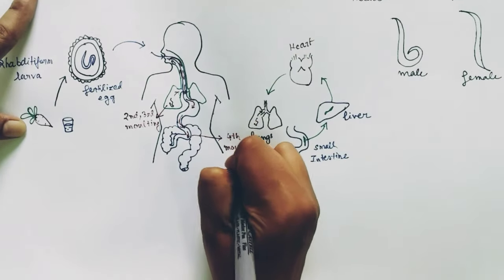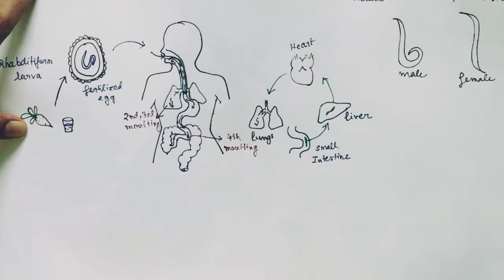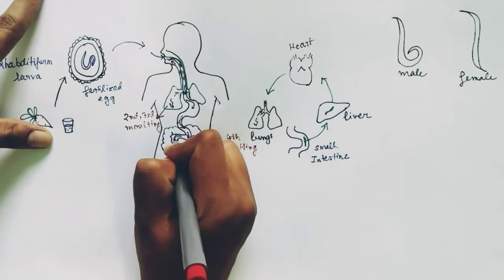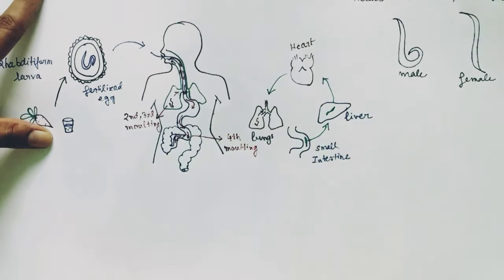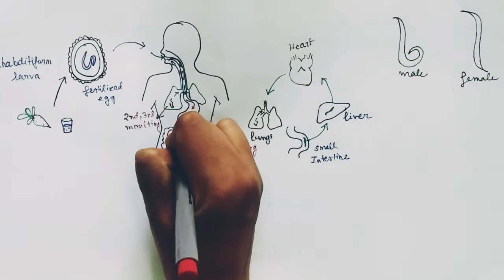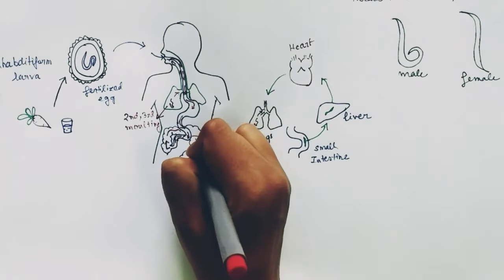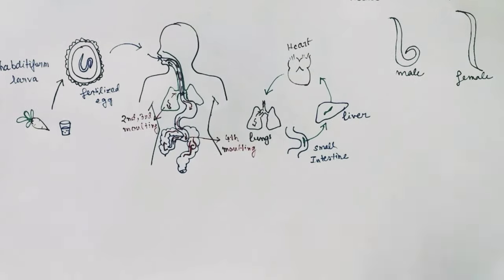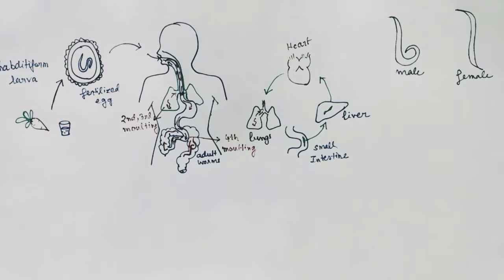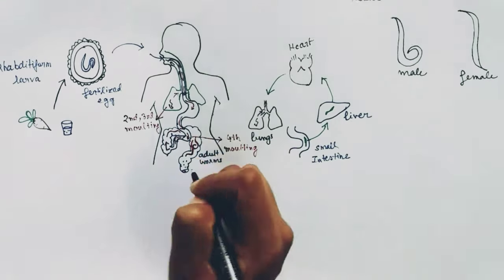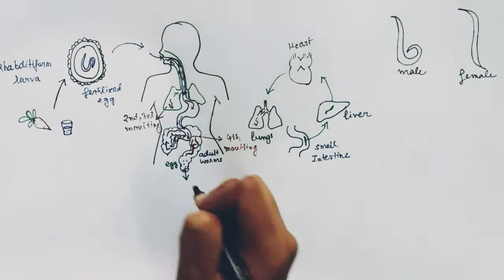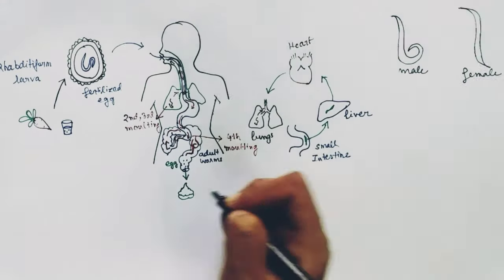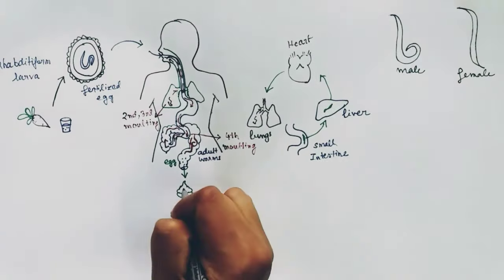After the fourth molting in the small intestine, the larva becomes the adult Ascaris lumbricoides. The male and female adult Ascaris travel to the large intestine, where they mate. The adults mate and form eggs, which are released through the feces and exit the body — the feces now contains the eggs of Ascaris lumbricoides.